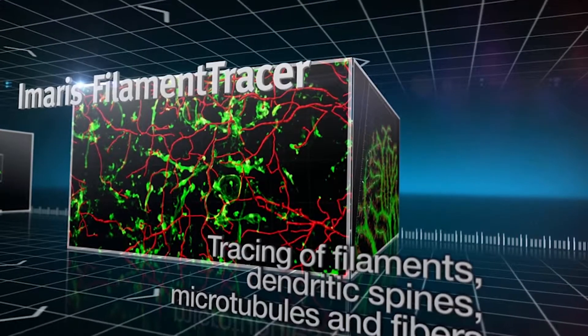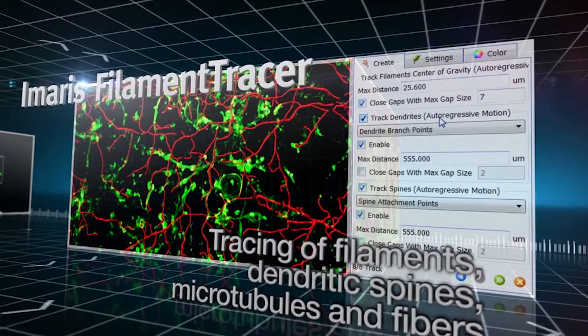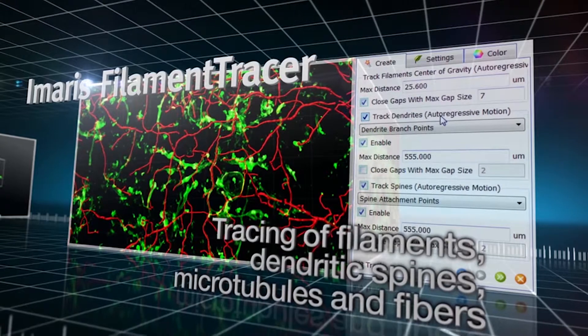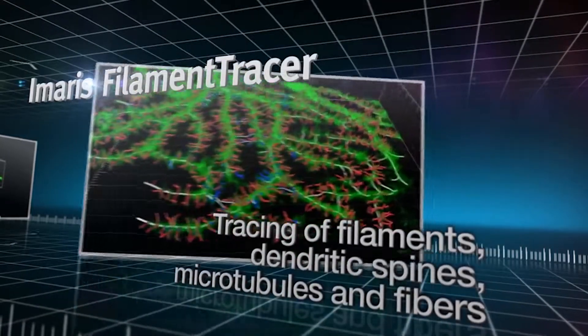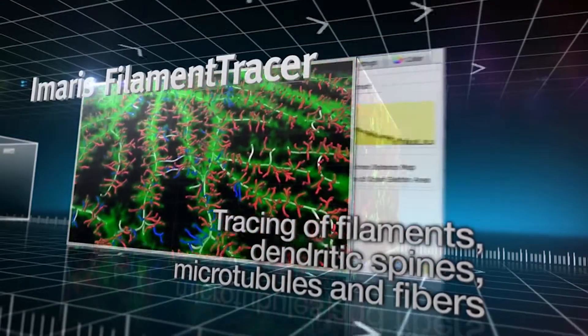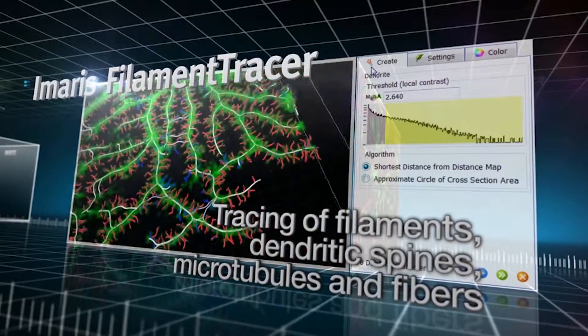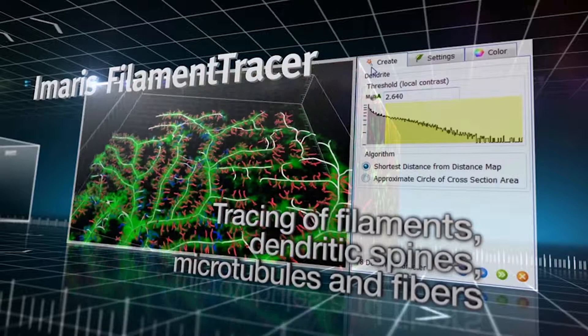A key module of Imaris, Filament Tracer, is the most advanced software solution for the automatic detection of filamentous structures in 2, 3 and 4D. With Filament Tracer, you can visualize and measure blood vessels, neurons, dendritic trees, spines and microtubules.